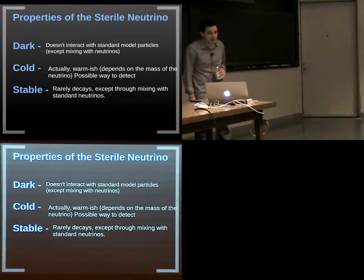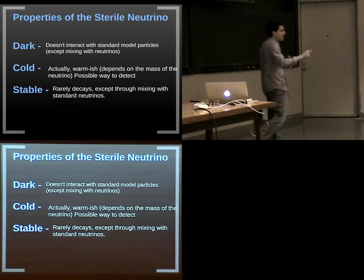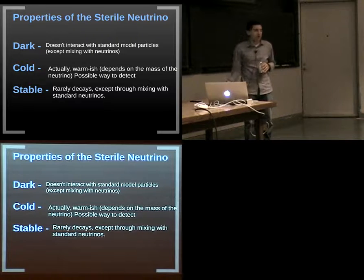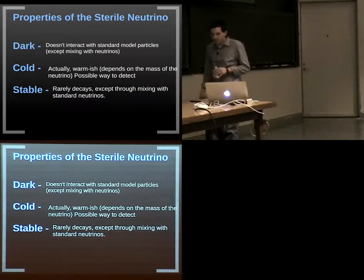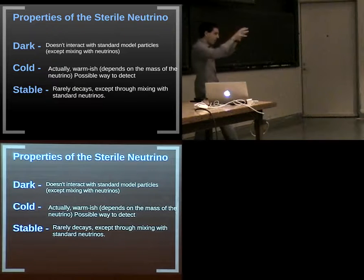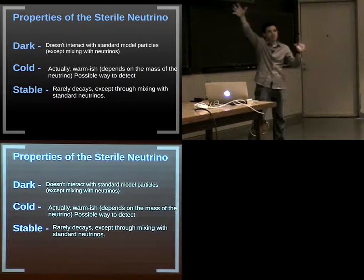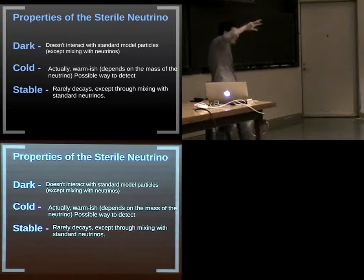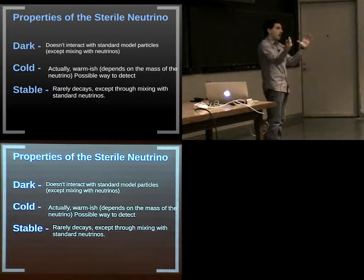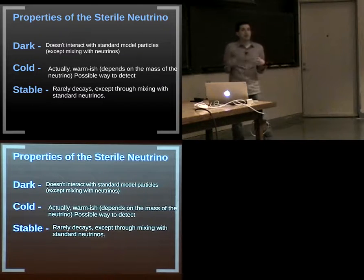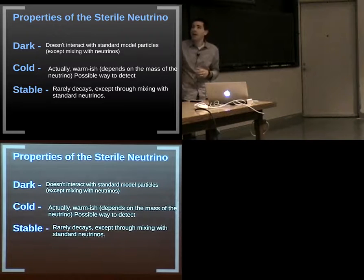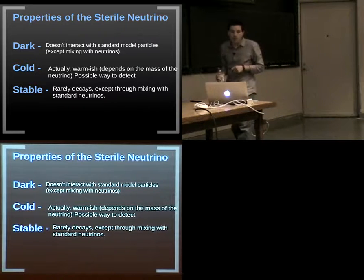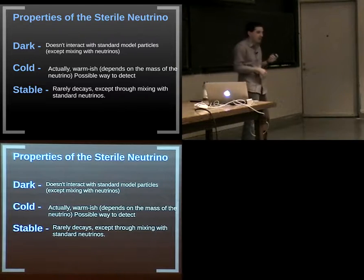Properties of the sterile neutrino: it's dark because it only interacts through rare mixing with normal neutrinos. It can be warmish rather than perfectly cold — if it has a mass of a few keV, it's moving somewhat faster, but structure can still form slightly differently. It's essentially stable — it only decays to other neutrinos via the weak force, which happens very rarely. How do we detect it? The sterile neutrino decays into a lighter neutrino and emits a gamma ray or X-ray to carry away the energy difference.